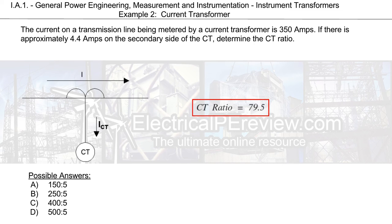So now that we've got our CT ratio of 79.5, we're going to have to compare it to the four possible answers on the bottom left corner of the screen. We start with A. 150 divided by 5 gives us 30. 250 divided by 5 gives us 50. 400 divided by 5 gives us 80. And 500 divided by 5 gives us 100.